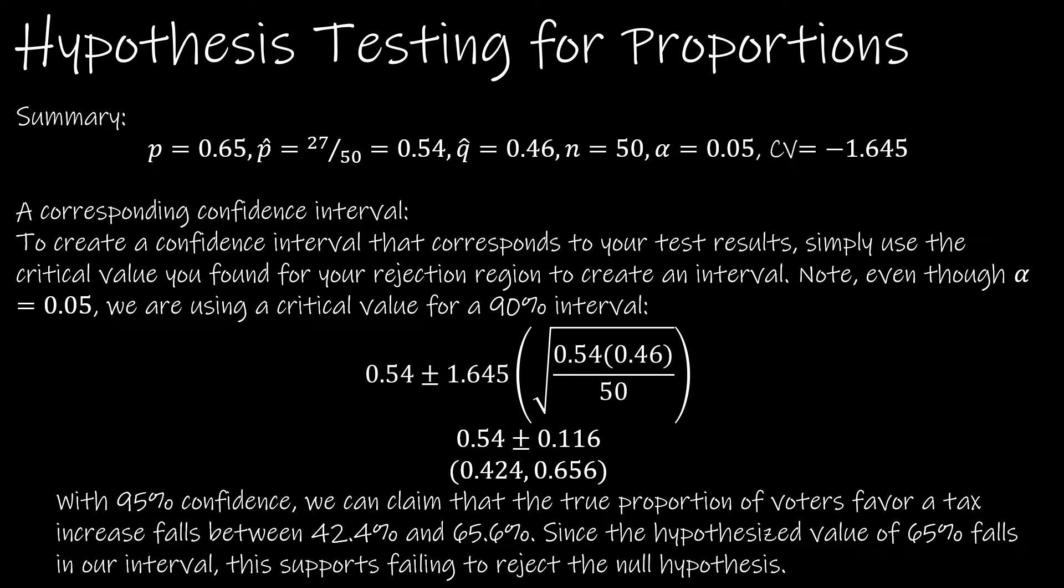To find the corresponding confidence interval, remember we're just going to use the critical value that we found before, always using that positive critical value. Finding a confidence interval is all about knowing the formula. For this, it's p-hat plus or minus the critical value. Keep in mind, z-star is not the same as a z-score. We're using a critical value, which is what we used for norm s inverse, times the square root of p-hat q-hat over n.